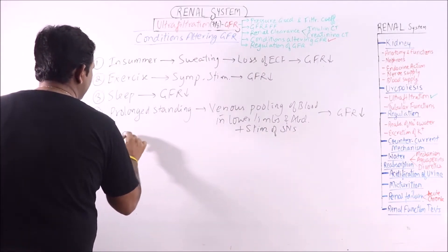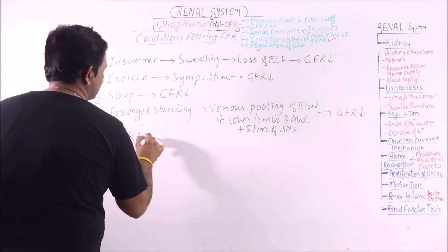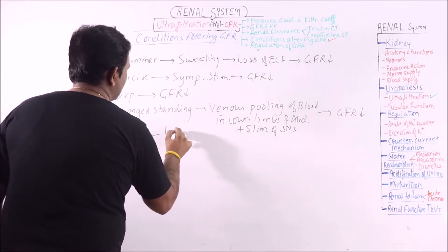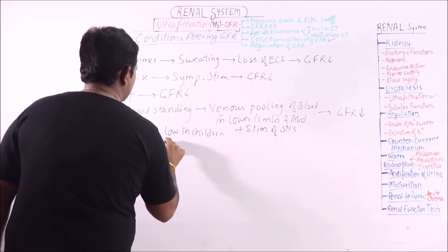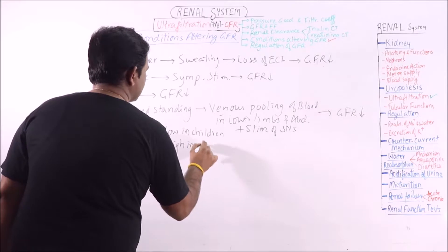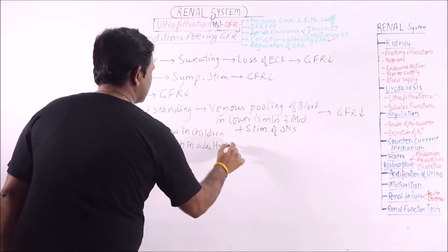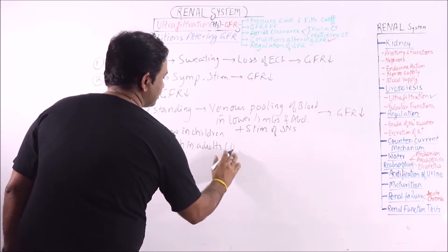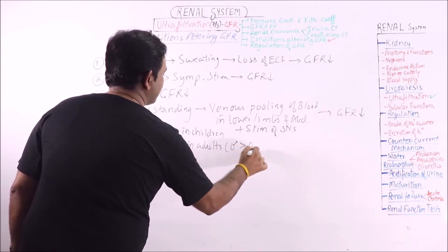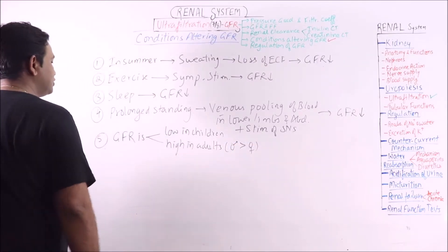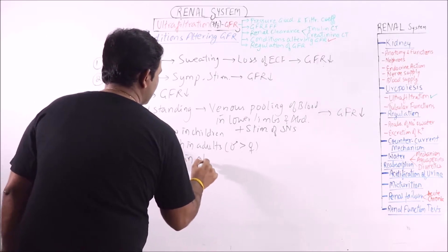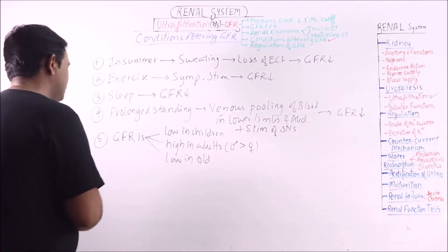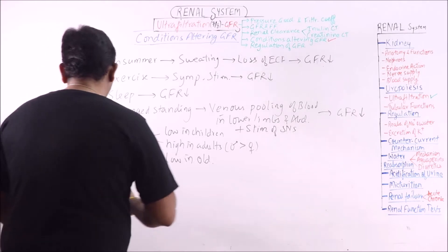GFR is low in children, high in adults, and males have higher GFR than females. It is low again in old individuals because of functional loss of nephrons.